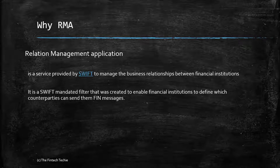This is because in the context of Swift, the list for allowing is much smaller than the list which we want to disallow. So the second line now starts making sense — it's actually a Swift-mandated filter that was created to enable financial institutions to define which counterparties can send them messages.